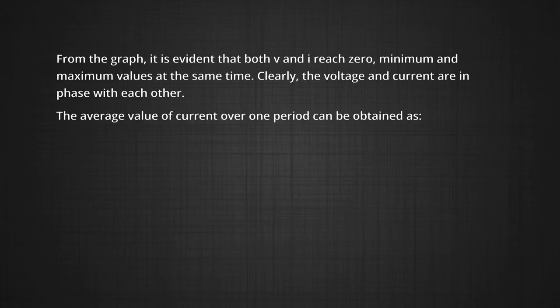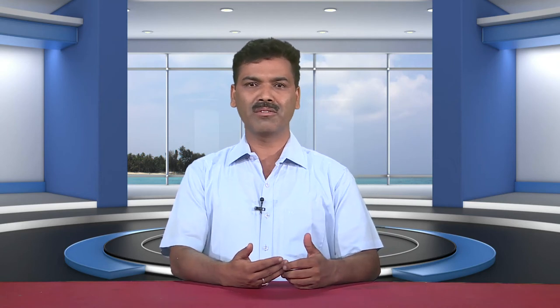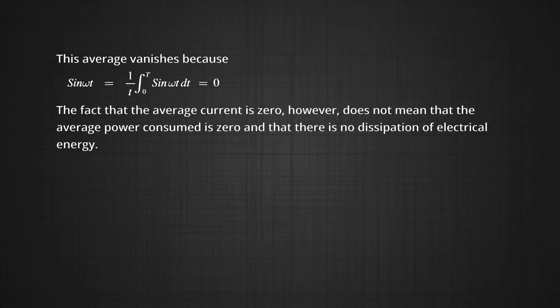The average value of current over one period is given as I_avg equals (1/T) integral from 0 to T of I₀ sin(ωt) dt, which equals zero. This is because for a complete cycle, the integral of sin(ωt) over 0 to T is zero. The fact that the average current is zero does not mean that the average power consumed is zero or that there is no dissipation of electrical energy.